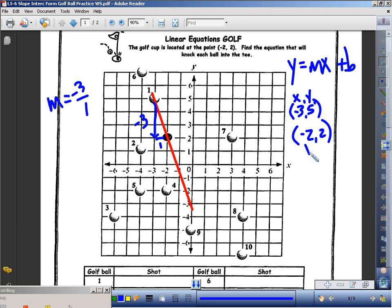x2, y2. I'm going to use my slope formula. y2 minus y1 over x2 minus x1. I'm going to plug in my numbers. Two subtract five over negative two subtract negative three.